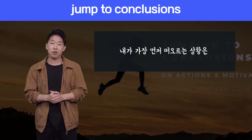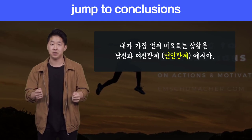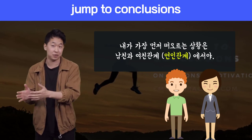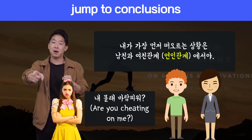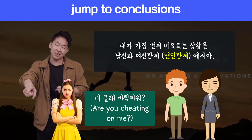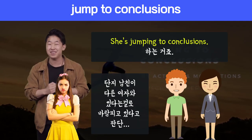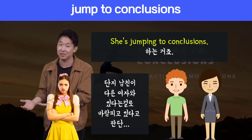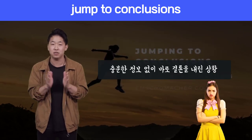The first example I always think of is a relationship between a boyfriend and a girlfriend. The boyfriend is out one day walking with another girl — not his girlfriend. His girlfriend sees him from far away and thinks, 'Oh my gosh, my boyfriend is cheating on me.' She's jumping to conclusions because she saw another girl and automatically thinks he's cheating. In reality, maybe it's his mom, his sister, or just a friend. She doesn't have all the information, so she's jumping to conclusions.